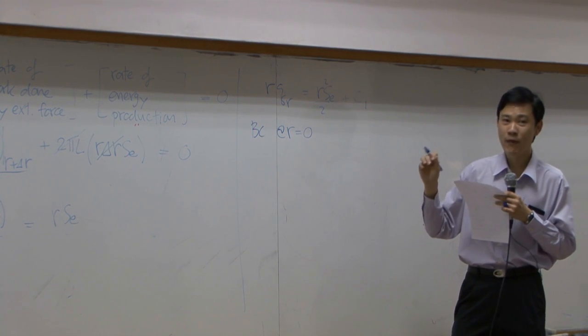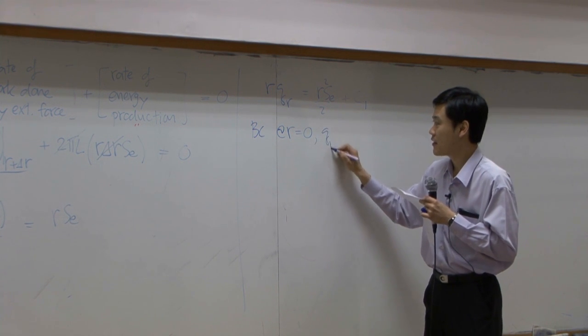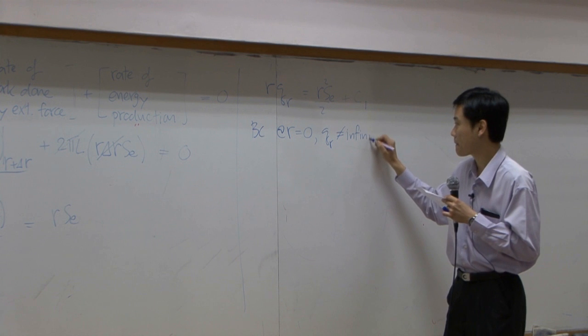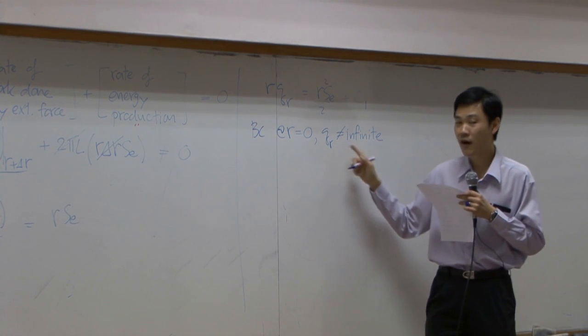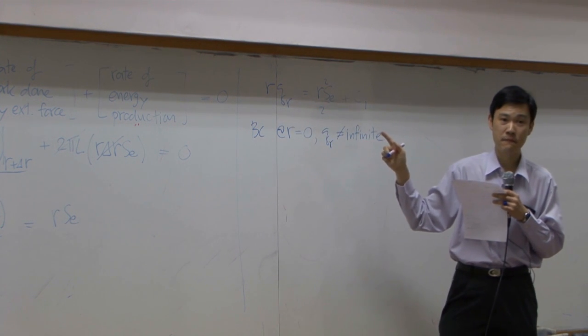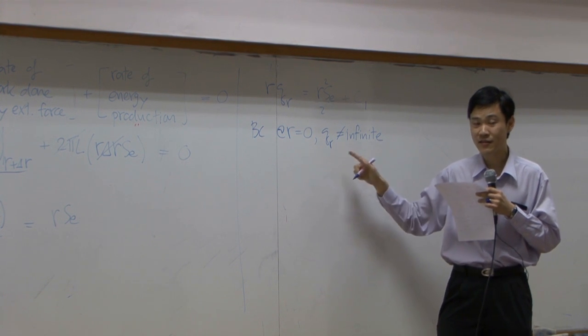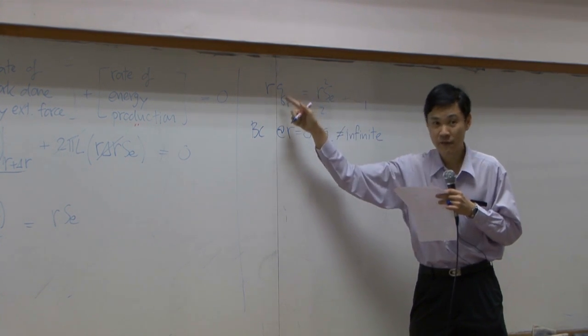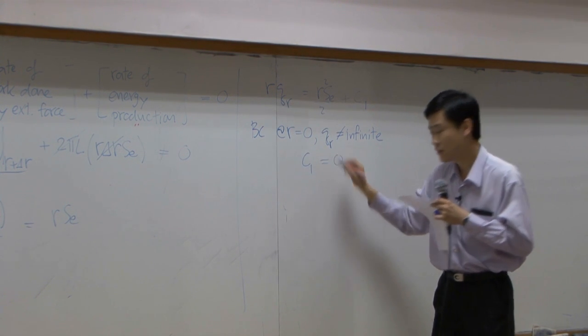The proper way to do it, you would say at r equal to zero, qr is not infinite. Because if qr is infinite, zero times infinite may not be zero. Right? So as long as the qr at the center is not infinite, this term would be definitely be zero. And as a result, you get C1 equal to zero.